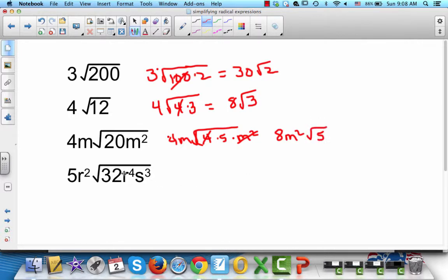Alright, do you want to try this last one? Pause the video and see what you can come up with. Alright, we've got 5r squared times. And you can break the 32 up into 16 times 2, times r to the 4. And the s3 can be s2 times s.